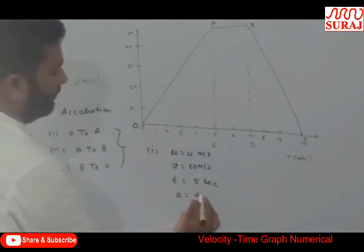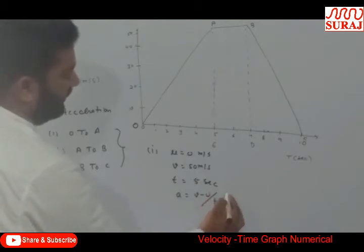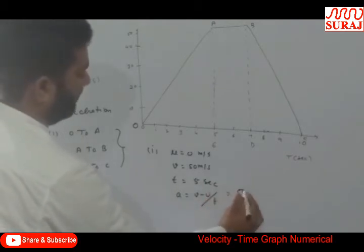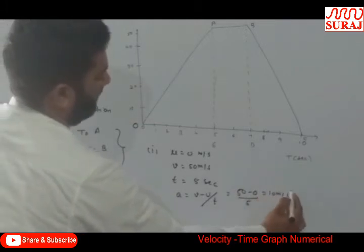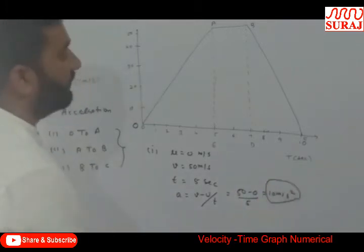So acceleration is equal to V minus U by T. So acceleration is equal to 50 minus 0 by 5. So acceleration is equal to 10 meter per second square. This is the first case.